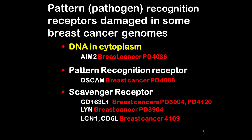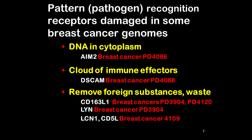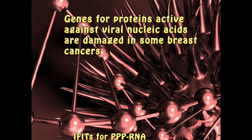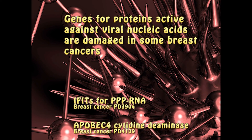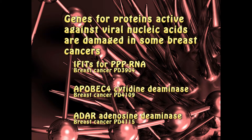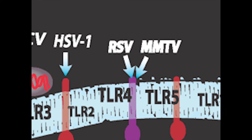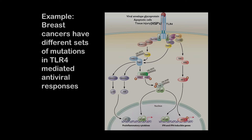In some breast cancers, there are mutations in the genes encoding for various innate immune receptors. Here are examples of damage to receptors for DNA in the cytoplasm, for a cloud of immune effectors, and for scavenger receptors that remove waste and toxic products. Genes that are active against viral nucleic acids are damaged in some breast cancers. Pathogen recognition receptors are an important part of innate immunity. TLR is used as one example, and the approximate points in breast cancers where TLR4-mediated responses were damaged is shown.